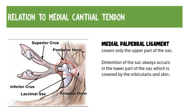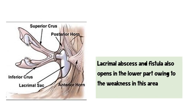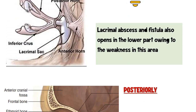Because the medial canthal ligament supports the upper part of the sac, sac distension always occurs in the lower part, which is mechanically weaker — covered only by orbicularis and skin, not by the medial canthal ligament. Similarly, because the lower part is mechanically weaker, it is also susceptible to lacrimal abscesses and fistulas — fistulas, including congenital ones, also open in the lower part owing to this weakness.